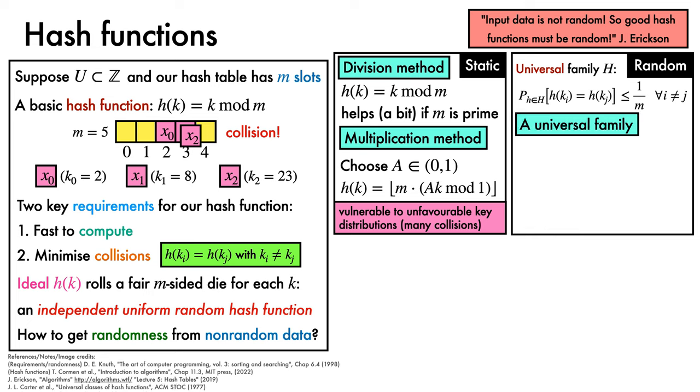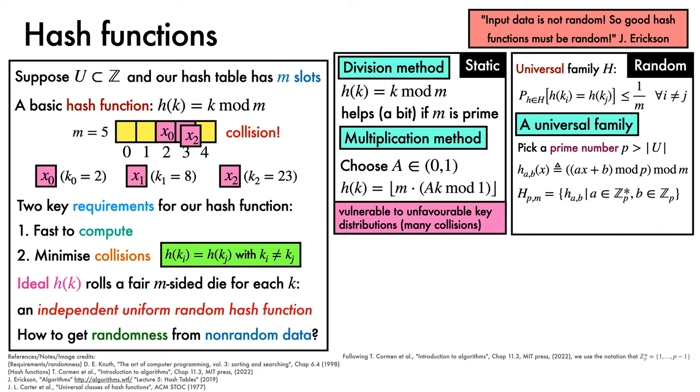The textbook example of a universal family of hash functions, introduced by Carter and Wegman in 1977, is to pick a prime number larger than the size of the universe of keys. Then, define a hash function via h(AB) equals (Ax + B) mod P mod M. Then, the family of hash functions HPM, defined as the set of HAB functions, is universal for A in the positive integers less than P, and B in the integers less than P. The parameters A and B are referred to as salts, which are sampled when the hash table is created, but then remain fixed.